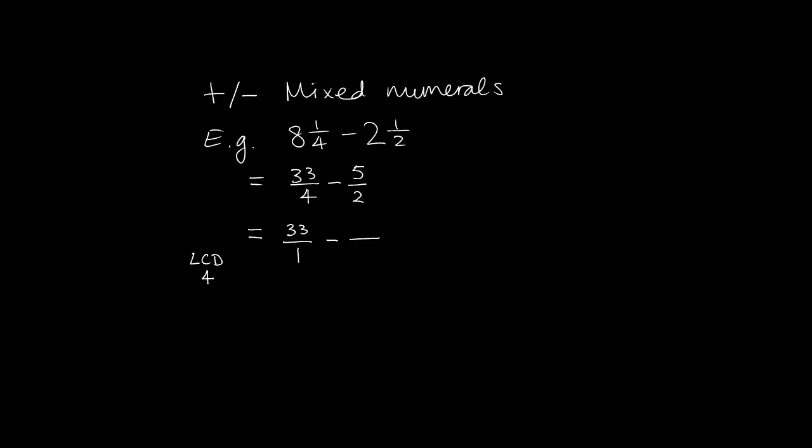So the first fraction remains the same. With the second fraction, I need to change it so it has a denominator of 4. So times by 2, times by 2. So I need to now work out 33 over 4 minus 10 over 4.